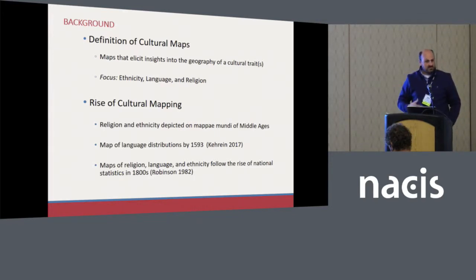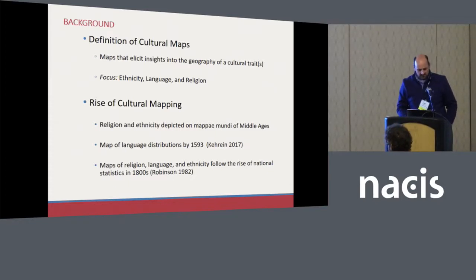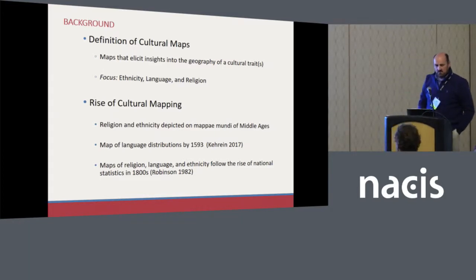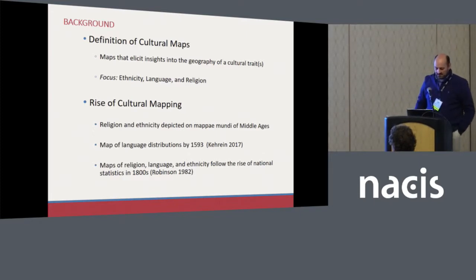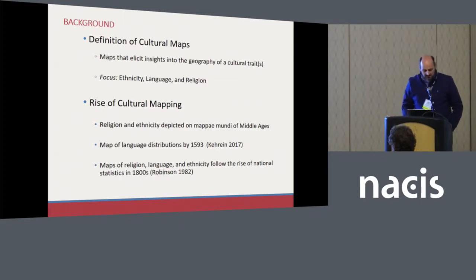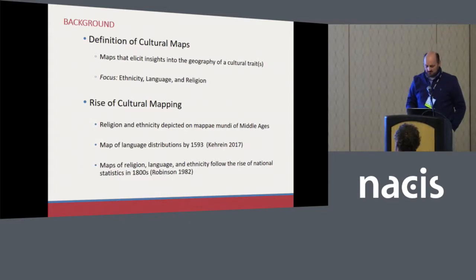I've made some of these maps and looked at a lot more of them, and have become very curious about how we do this, how we make these maps, and what they tell us. These maps have a rich history. We can look at the Mapamundi in the Middle Ages and the influence of religion on those maps. Maps of language distributions go back at least to the late 16th century. As Arthur Robinson details in his book on the history of thematic mapping, when national statistics collected by government agencies rose in the 19th century, cartographers began making a lot of thematic maps showing these variables.